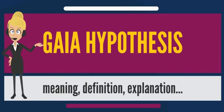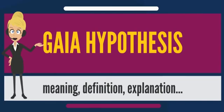Less accepted versions of the hypothesis claim that changes in the biosphere are brought about through the coordination of living organisms and maintain those conditions through homeostasis. In some versions of Gaia philosophy, all life forms are considered part of one single living planetary being called Gaia. In this view, the atmosphere, the seas and the terrestrial crust would be results of interventions carried out by Gaia through the co-evolving diversity of living organisms.